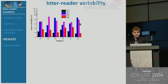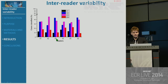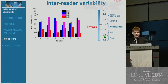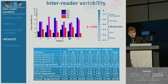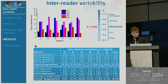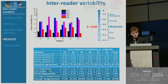Let's have a look at the inter-reader variability. There is a color for each BI-RADS category — black is category one and red is category four. You can notice for the six readers the different height of the columns showing variability, which is expected. If you look at the Kappa statistics, you find in fact a moderate agreement across the readers. If you now compare results from each reader versus majority of readers, you can count cases with absolute agreement for each BI-RADS category, and the absolute agreement, looking at the percentages, is pretty high.